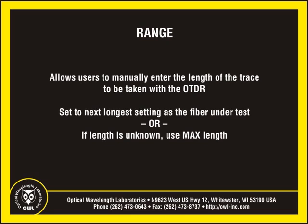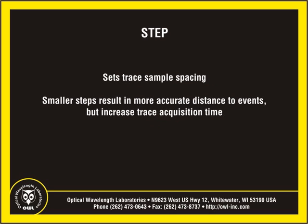The range setting allows the user to manually enter the length of the trace to be taken with the OTDR. For best results when setting range manually, set the range to the next longest setting as the actual fiber under test, or if the length is unknown, set to max length. Setting the range shorter than the fiber under test will prevent the OTDR from displaying the end of the fiber. The step setting sets the trace sample spacing; a smaller step produces more accurate distances to events but increases trace acquisition time.